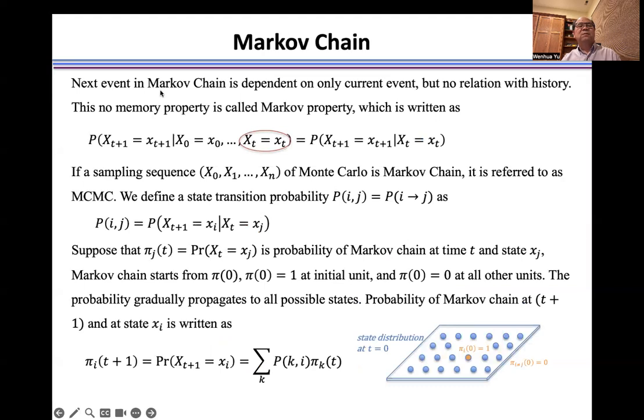Next, the event in Markov Chain is dependent on only current event, but no relation with history. This no-memory property is called Markov property, which is written as P(Xt+1 = xt+1 | Xt = xt,...,X0 = x0) = P(Xt+1 = xt+1 | Xt = xt). That means probability of state x at t+1 depends only on condition of state x at time t.